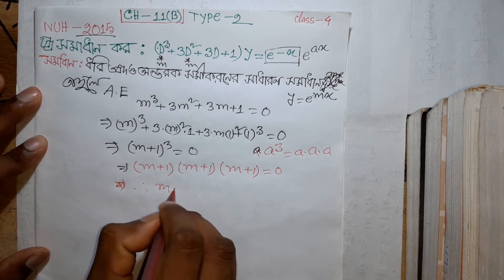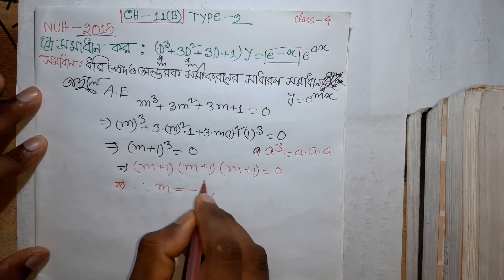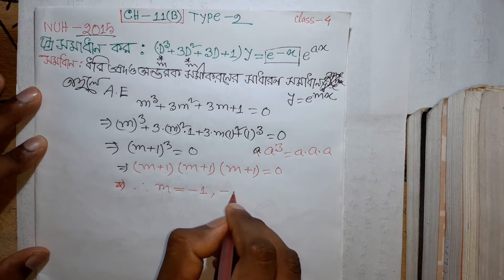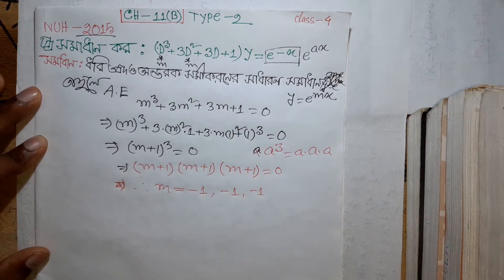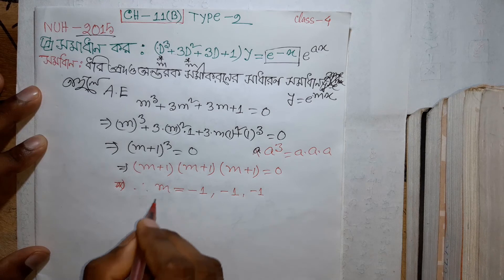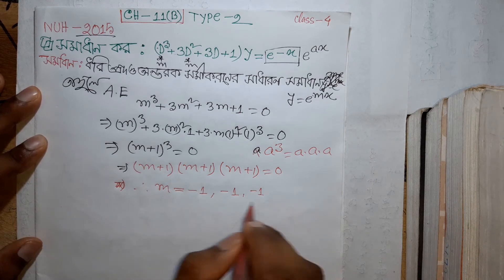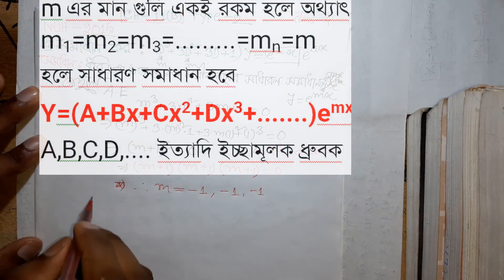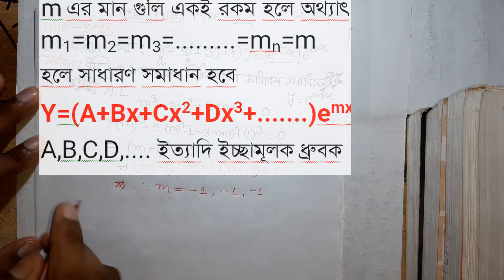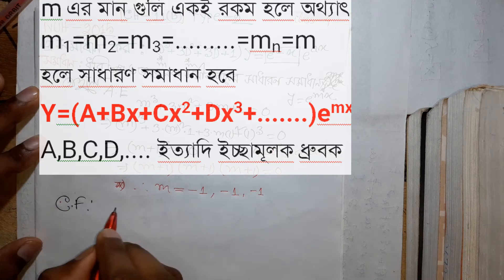So m plus 1, minus 1, minus 1, minus 1. The complementary function — yc — is now found from these repeated roots.